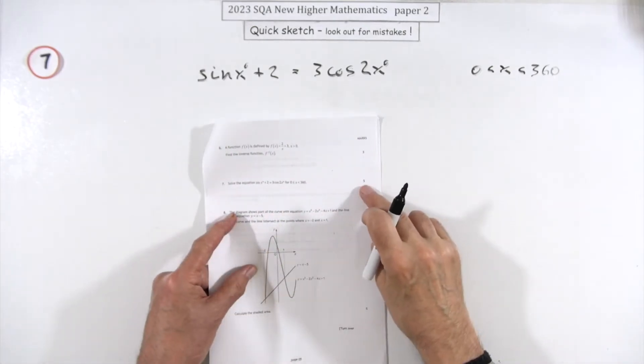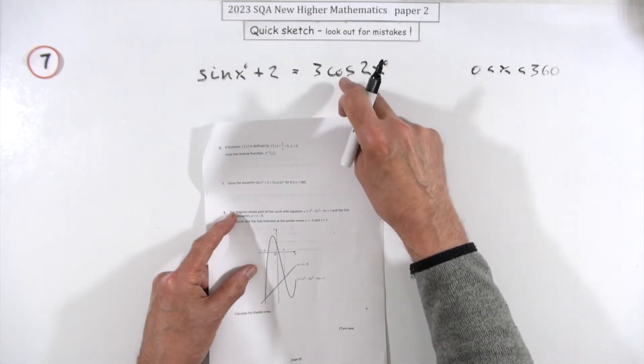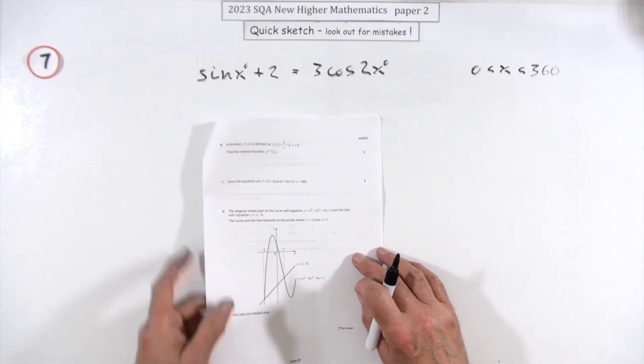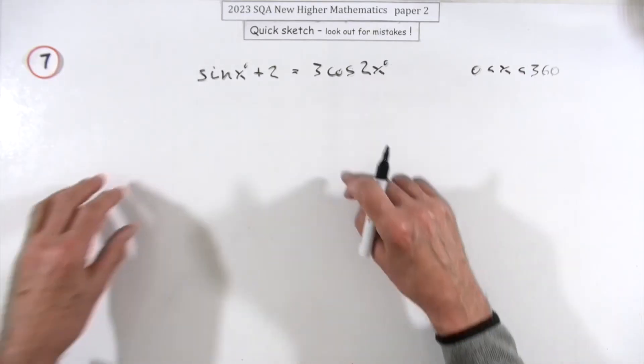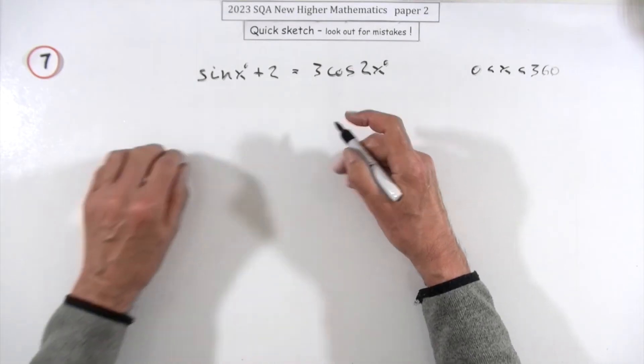Number seven for five marks is the double angle equation, the one with the cos. That's the one that gives you more marks because it gives you a quadratic. You have to change that into a single angle, and the cos has got three forms, so you need to make it match this one.